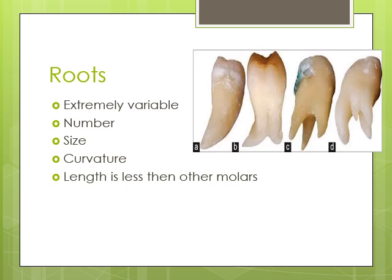The roots are highly variable in the mandibular third molar. Abnormal curvature can be present — such as distal curvature — or the roots could be fused together. There can be an increase in the number of roots, and accessory canals are commonly found in the mandibular third molar. Generally, third molars have less length compared to other molars in the oral cavity.